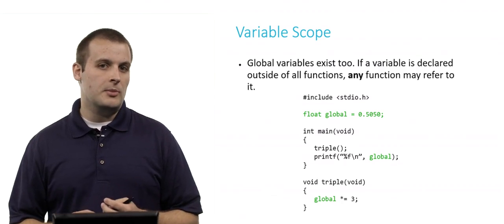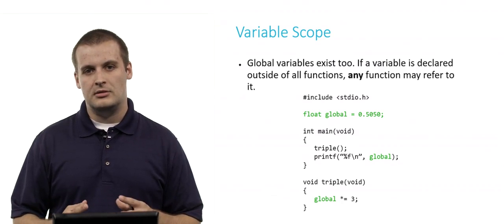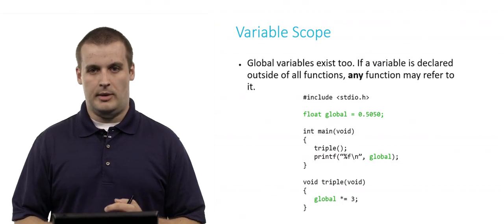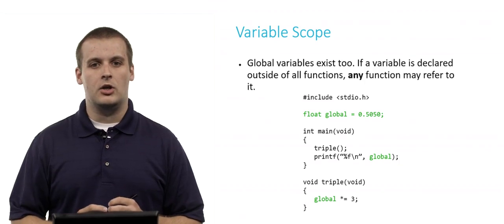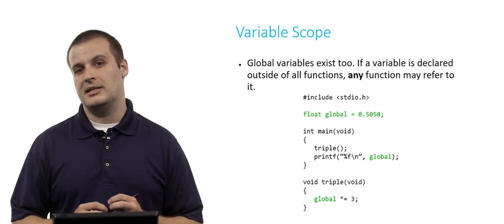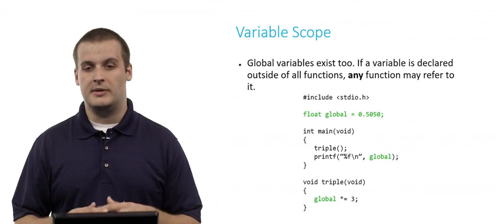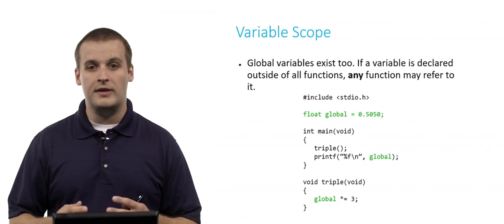Now, as I mentioned, global variables do exist. If you declare that variable outside of any function, all of the functions in the program can refer to it. So in this case, I've highlighted in green a global variable declaration. In this case, the variable being declared is called global, to be extremely clear about it. It is of type float, and I assign it the value 0.5050.